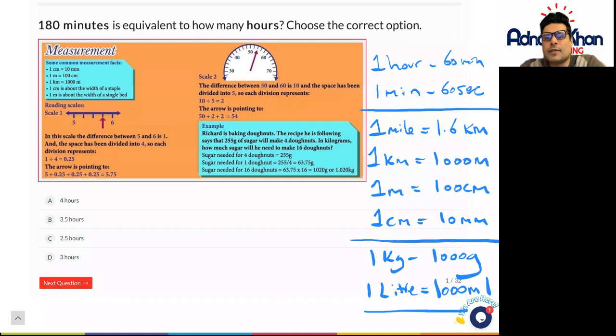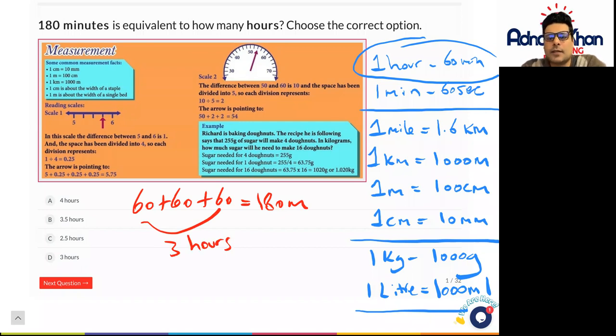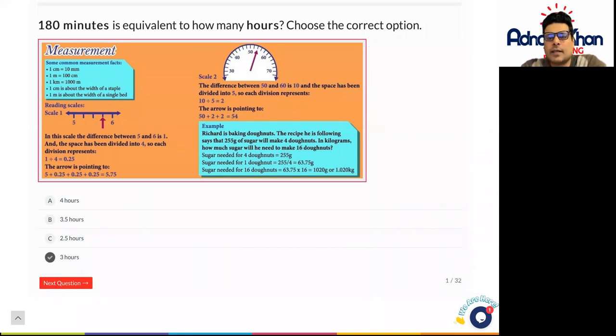So you've got various measurements that you actually need to learn and memorise when it comes to answering questions as well. So the first question states 180 minutes is equivalent to how many hours. So we know that in this case there are 60 minutes in one hour. So 60 add 60 add 60 equals to 180 minutes and that will then equals to three hours. So three hours will be our answer here for this particular question.